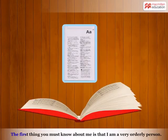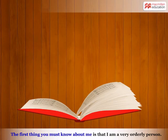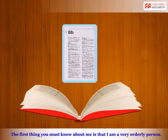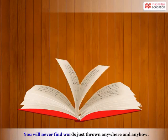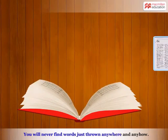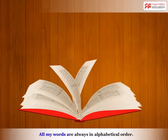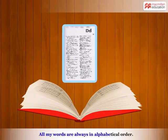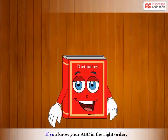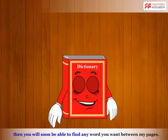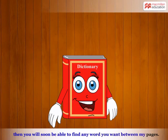The first thing you must know about me is that I am a very orderly person. You will never find words just thrown anywhere and anyhow. All my words are always in alphabetical order. If you know your ABC in the right order, then you will soon be able to find any word you want between my pages.